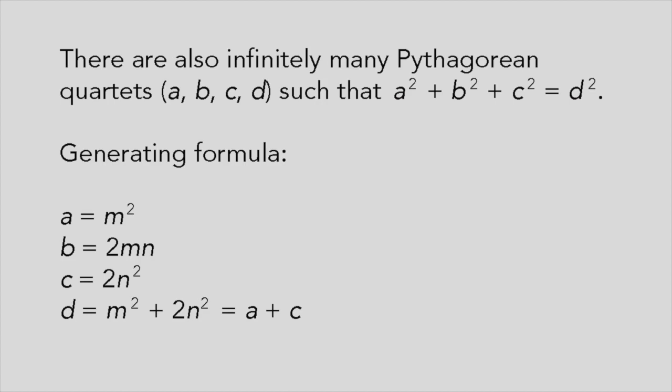This is simply the three-dimensional form of Pythagoras' theorem, and we can interpret it as the fact that the point in three dimensions with Cartesian coordinates ABC lies an integer distance D from the origin.